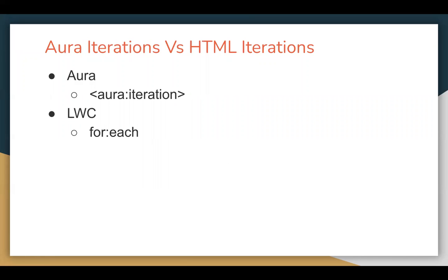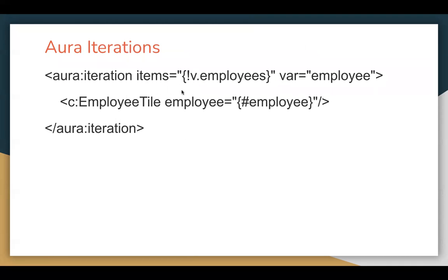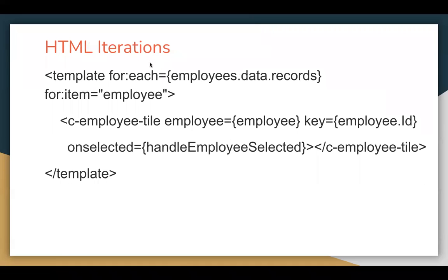Then Aura iteration versus HTML iteration. In Aura we write aura:iteration with an items attribute — items is a collection list and each element of the list is available through an item variable. In LWC you write template with for:each passing a list, and each element is available through the for:item variable. I'm giving a high-level difference here; detailed specification will be covered in individual videos.